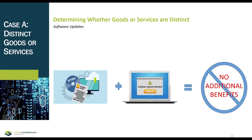Turning to software updates: the software remains functional with or without the updates, meaning the updates do not significantly affect the customer's ability to use and benefit from the software license. The software updates are not necessary to ensure the software maintains a high level of utility during the license period. The company considers none of the promised goods or services will significantly modify or customize one another, and therefore is not providing a significant integration service combining them into one combined output. The goods and services are not highly interdependent or interrelated, as the company can fulfill its promise to transfer the initial software license independently from installation services, software updates, and technical support.